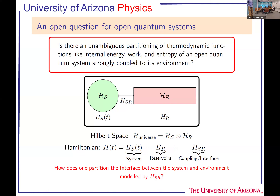The open question, boiled down specifically: is there an unambiguous way to partition thermodynamic functions like internal energy, work, and entropy between an open system and the environment to which it is strongly coupled? We have the Hilbert space of a system, the Hilbert space of the environment or reservoir, the Hamiltonian of the system HS, the Hamiltonian of the reservoir, and then the off-diagonal coupling term between them. The question of partitioning really boils down to how we should partition this interface — described by the coupling Hamiltonian — in order to separately describe the thermodynamics of the system and the reservoir.